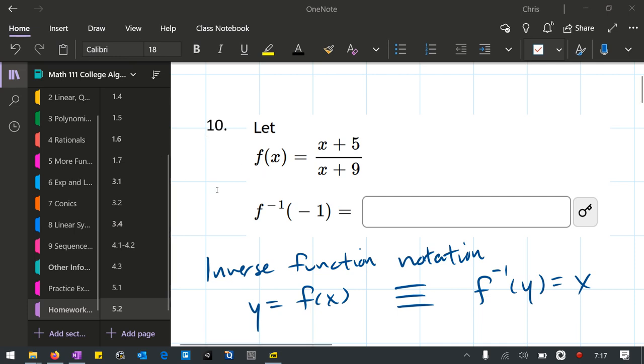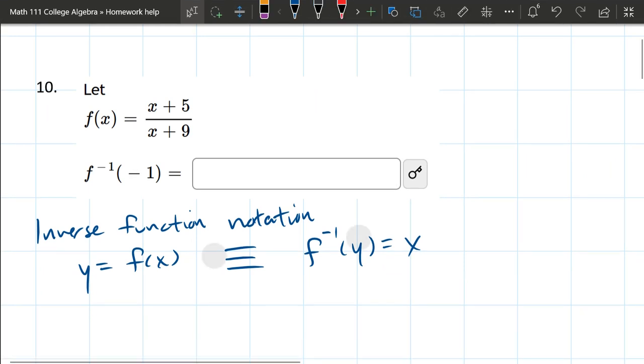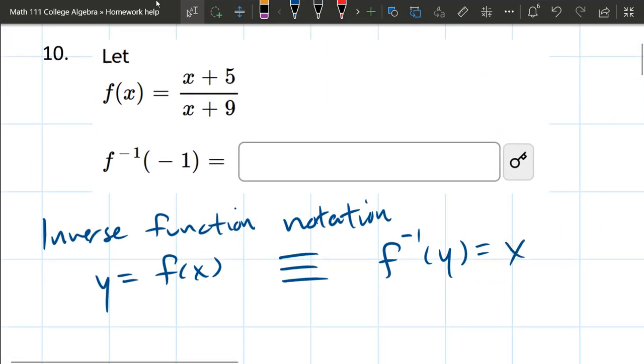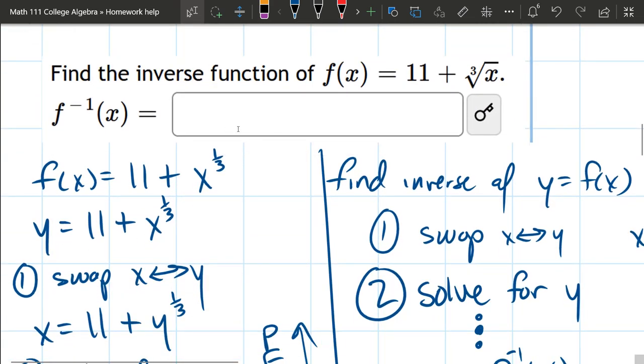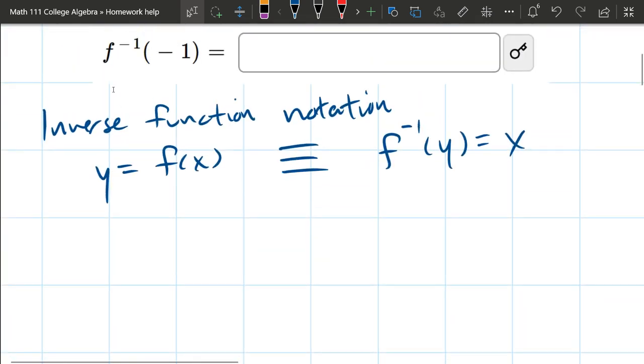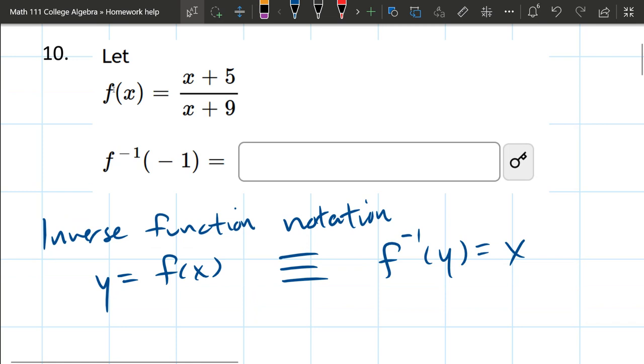We're going to use this inverse function notation. There's another way to solve this if you want to. You can find the actual inverse function, which we did have to do on some other problems. If you find the inverse function, it's two steps: swap x and y, then solve for y. I'm not going to do that. Instead, I'm just going to flip this around using the inverse function notation.